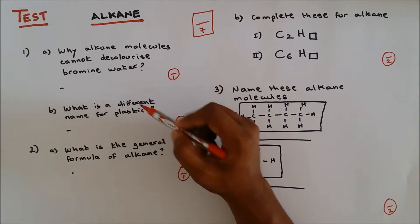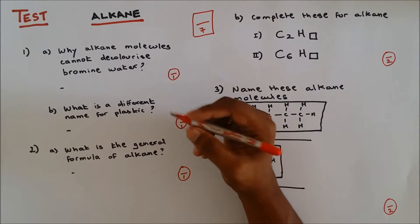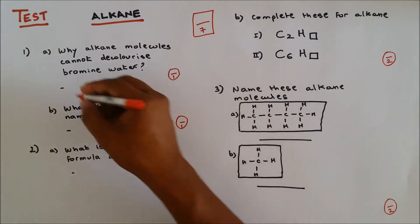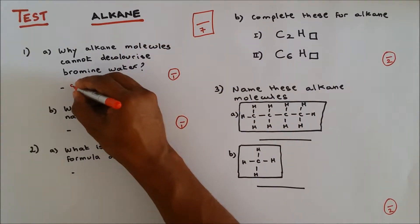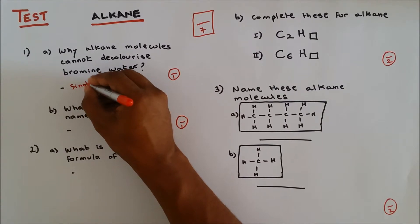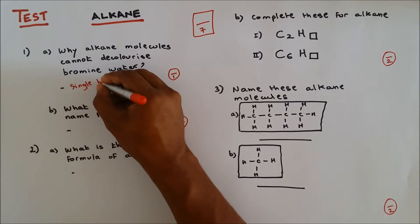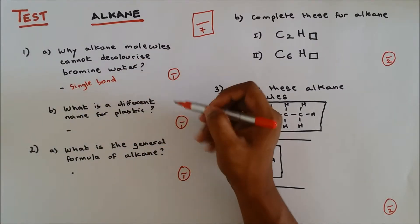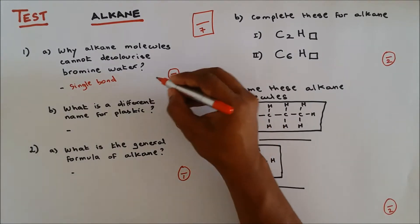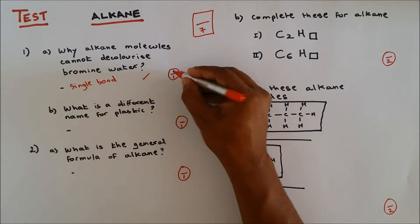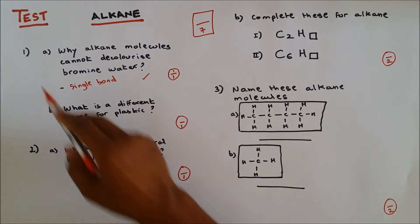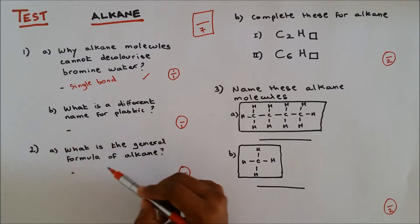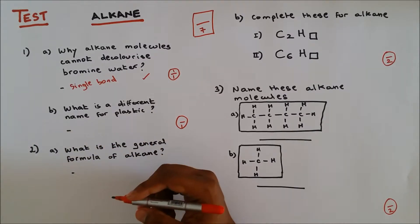The reason is because alkane contains single bonds, or you could say it has no spare bond. That's one out of one. Question number 1b: what is a different name for plastic? The scientifically different name for plastic...